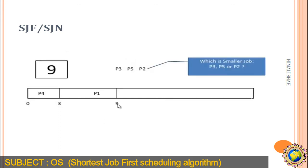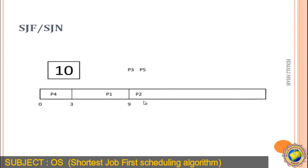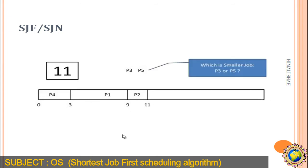Up to time 9, the processes P3, P5, and P2 have arrived. We again consider their burst times: P3 is 8, P5 is 4, and P2 is 2. The smallest is P2, so P2 executes next for 2 units of time. 9 plus 2 equals 11, so P2 finishes at time 11.